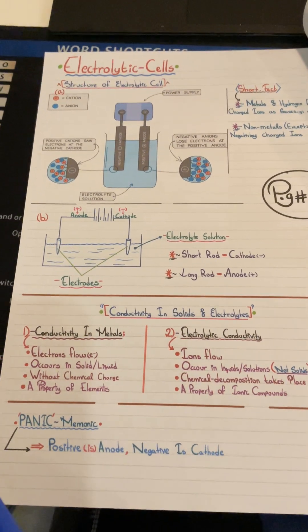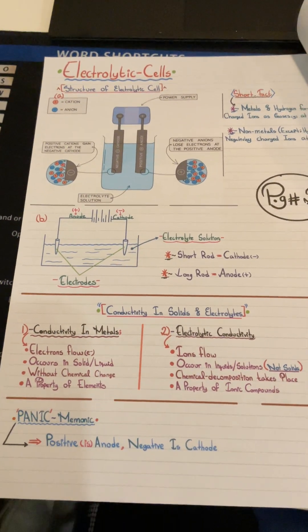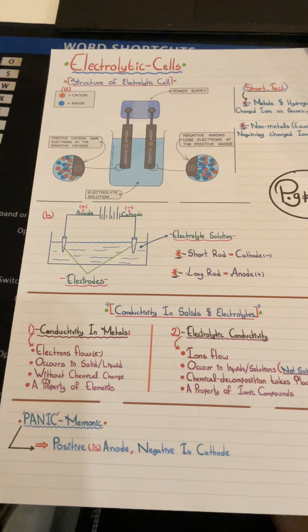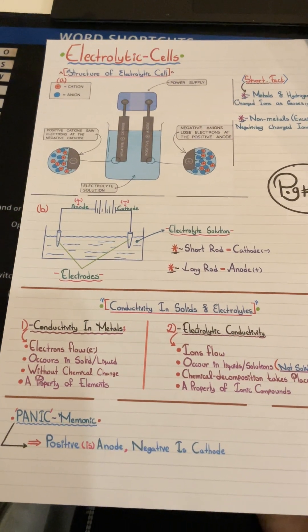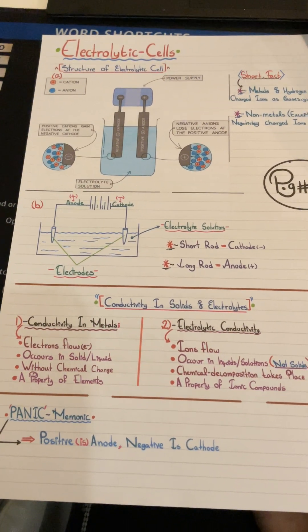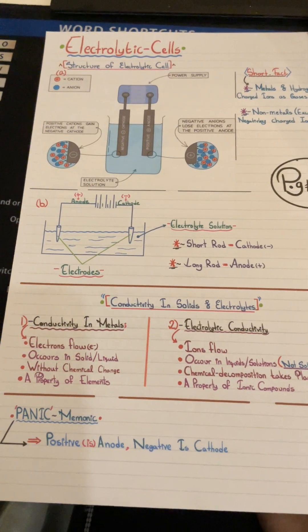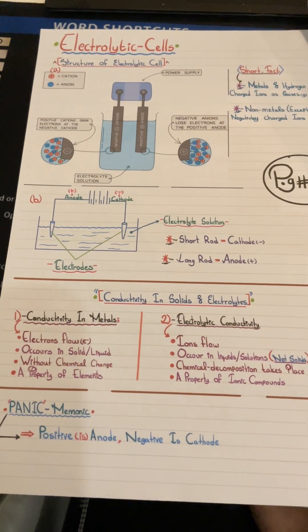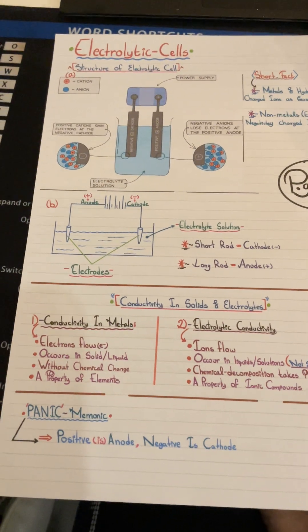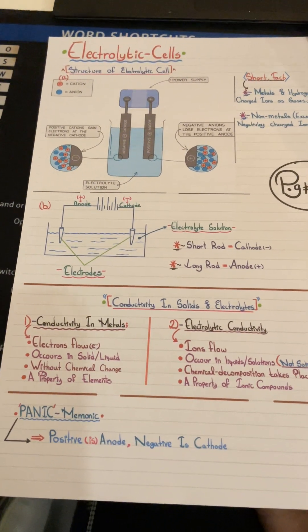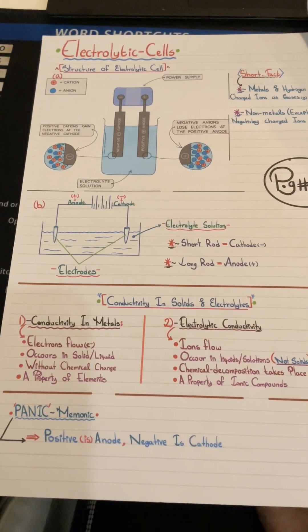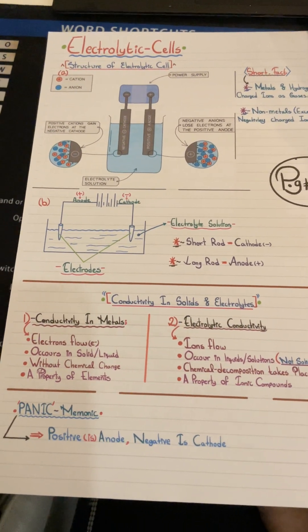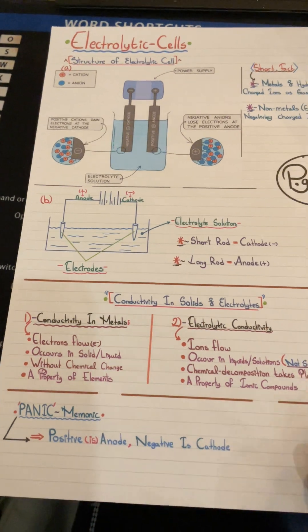Here are two mnemonics to remember: OIL RIG — Oxidation Is Loss of electrons, Reduction Is Gain of electrons. And PANIC — Positive is the Anode, Negative Is the Cathode.